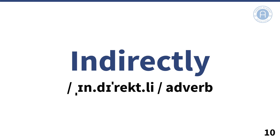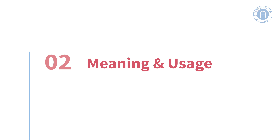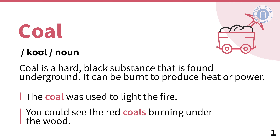Now that you have worked on pronunciation, let's move on to the meaning of the words and how we use them in a sentence. Coal is a hard, black substance that is found underground. Have a look at the picture we have of coal. It can be burnt to produce heat or power. The coal was used to light the fire. You could see the red coals burning under the wood.